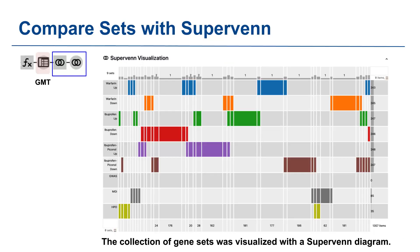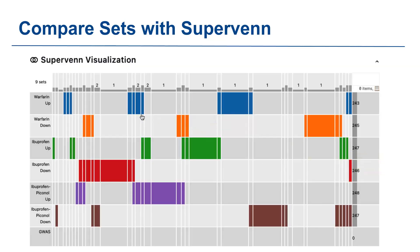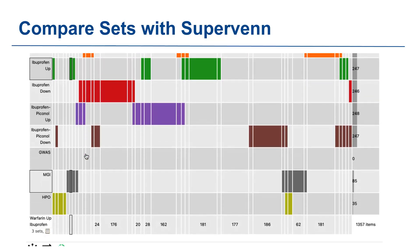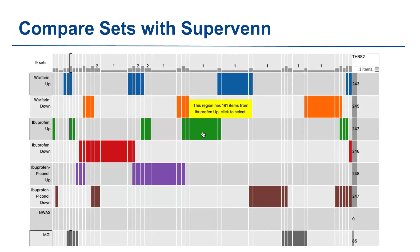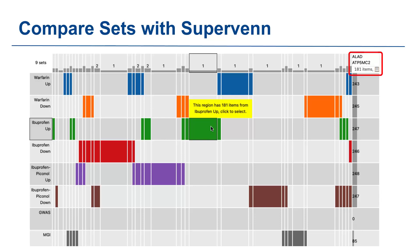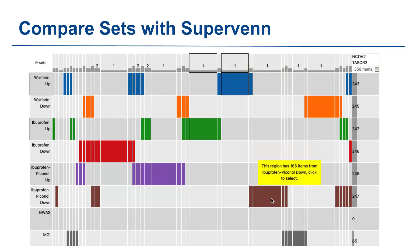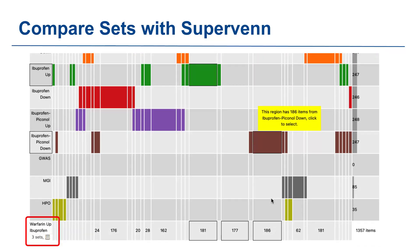After merging the phenotype and drug gene sets into a single gene set library in GMT format, we can create a superven diagram. A superven diagram helps us visualize shared genes across different gene sets. The superven diagram is interactive — you can select specific areas to view genes and terms. Click on the areas of interest in the diagram and a list of genes will appear on the top right. You can also check selected terms in the bottom left corner and easily copy them to your clipboard by clicking the icon.